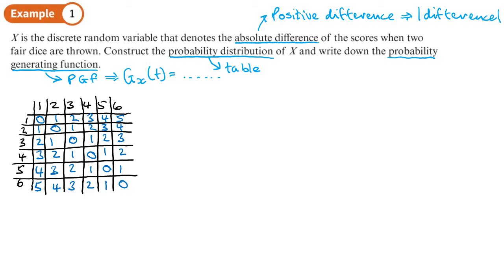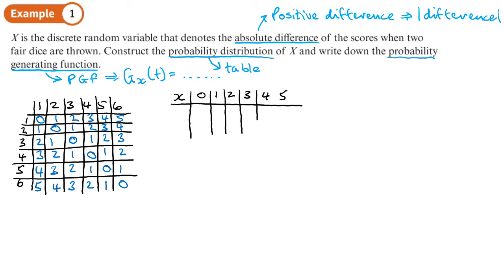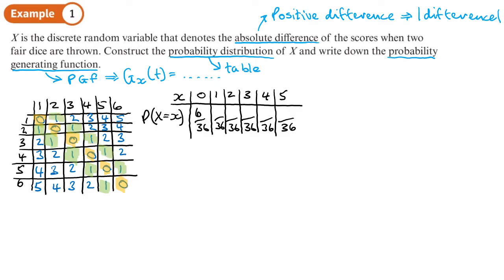Now we can construct the probability distribution. The top row has the outcomes — the absolute differences — which are 0, 1, 2, 3, 4, and 5. The bottom row has the probabilities, all out of 36 since there are 36 outcomes. Counting the zeros: there are 6, giving 6 over 36. Counting the ones: there are 10, giving 10 over 36.